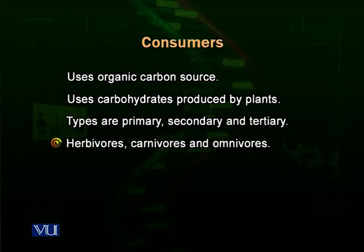For example, human beings — we are omnivores. We eat vegetables and plants, and we also eat meat from animals. So omnivores are organisms who can feed upon both animal and plant sources.